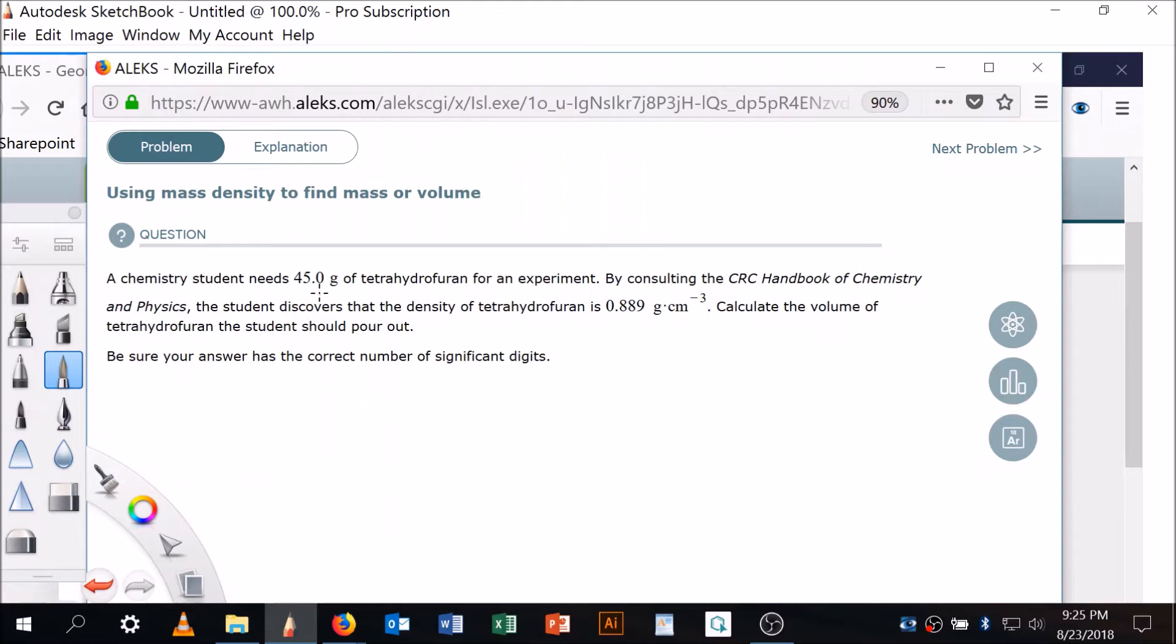A chemistry student needs 45 grams of tetrahydrofuran for an experiment. By consulting the CRC Handbook of Chemistry and Physics, the student discovers that the density of tetrahydrofuran is this. Calculate the volume. Okay, looking for a volume.